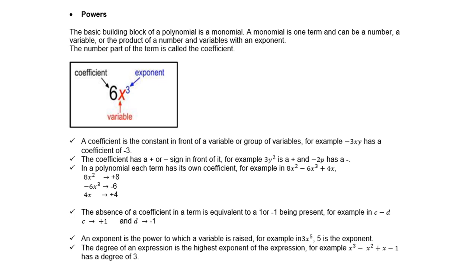An exponent is the power to which a variable is raised. For example, in 3x⁵, 5 is the exponent. The degree of an expression is the highest exponent of the expression. For example, x³ - x² + x - 1 has a degree of 3.